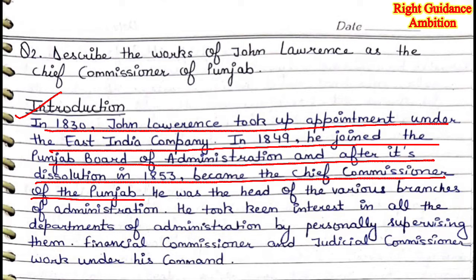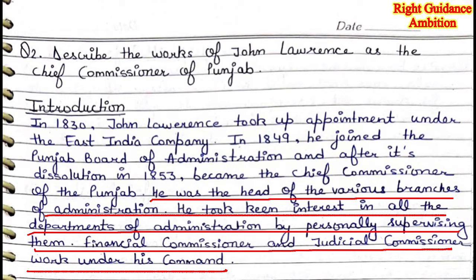As Chief Commissioner of Punjab, John Lawrence was the head of various branches of the administration, personally supervising them. The Finance Commissioners and the Judicial Commissioner worked under his command — one handling tax and revenue, the other handling judiciary decisions.